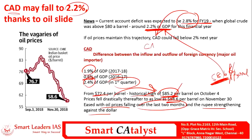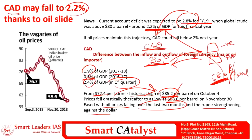Now we are going to see what current account deficit means. First, we have to know what balance of payment means — it represents the amount of money which a country gives to or receives from another country, so it might be negative or positive. Balance of payment consists of two major components: one is the capital account and another one is the current account.